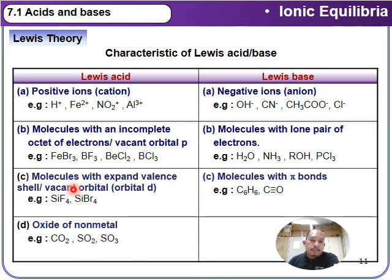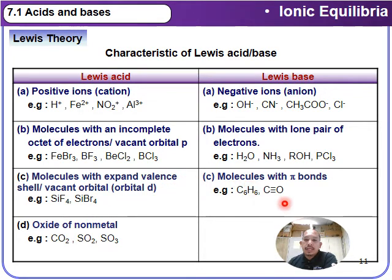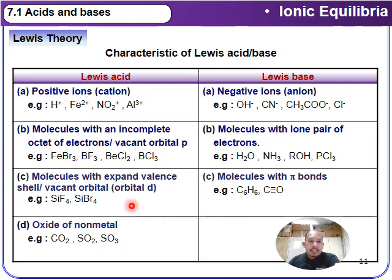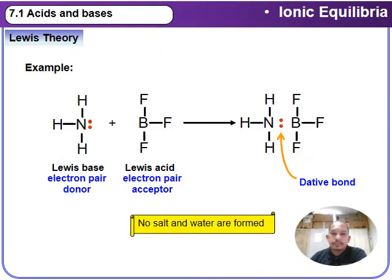Additionally, molecules with an expanded valence shell containing d-orbitals, such as SiF₄ and SiBr₄, are examples of Lewis acids. Molecules containing pi bonds, such as benzene, C₆H₆, and compounds with a C≡O triple bond, are considered Lewis bases. Another characteristic of Lewis acids includes non-metal oxides, such as CO₂, SO₂, and SO₃.